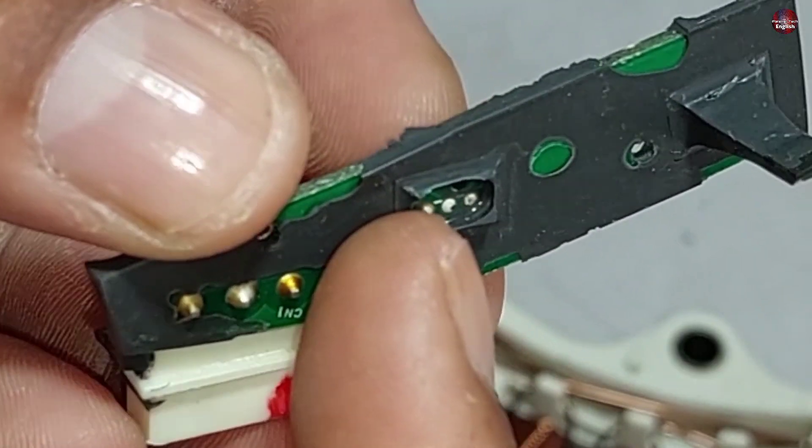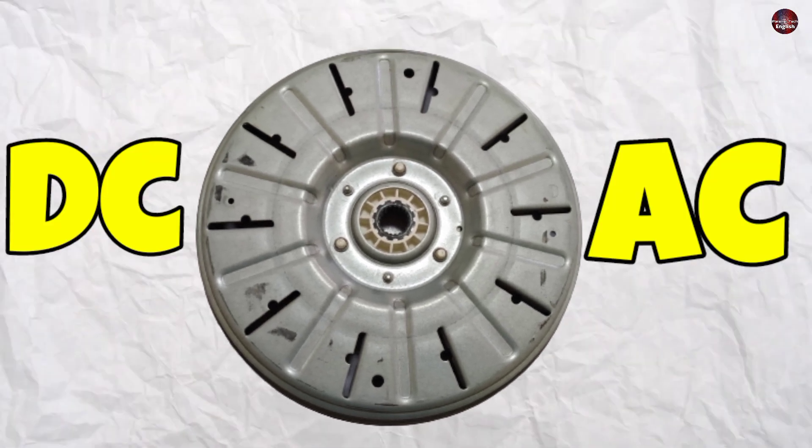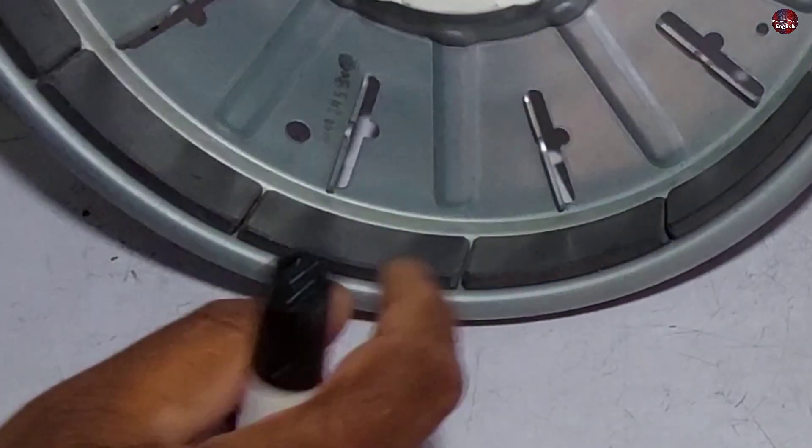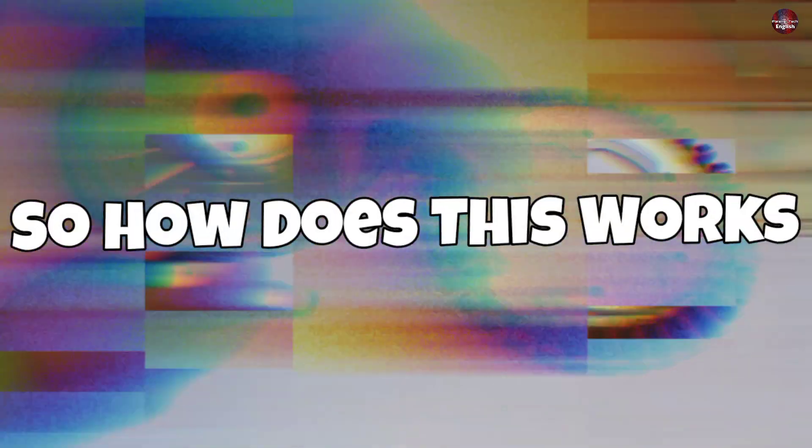I have removed one sensor from here for testing it. Now whether a motor is DC or AC, as this is a DC inverter motor, the rotor of this motor has permanent magnets installed inside it. So how does this work?